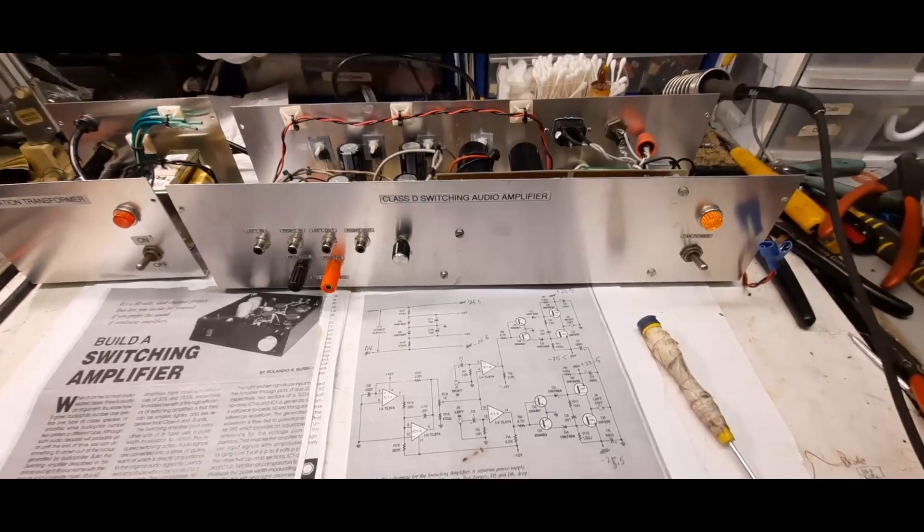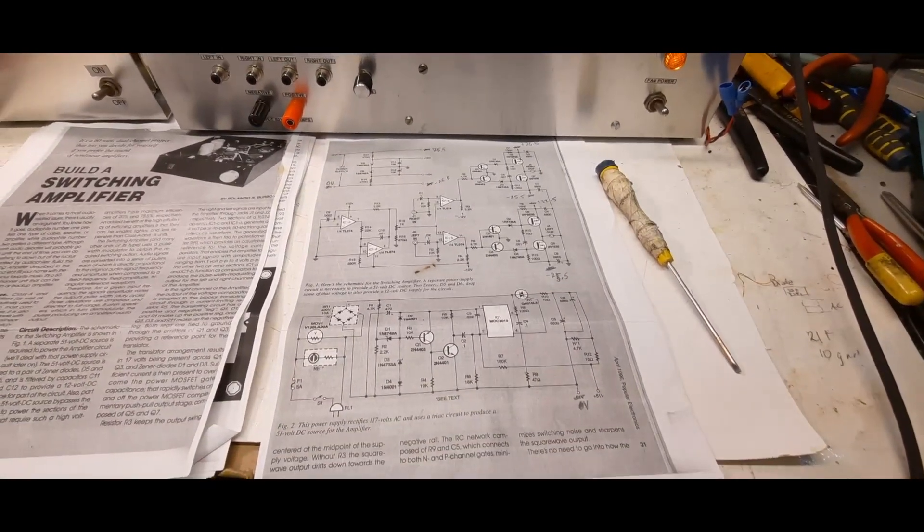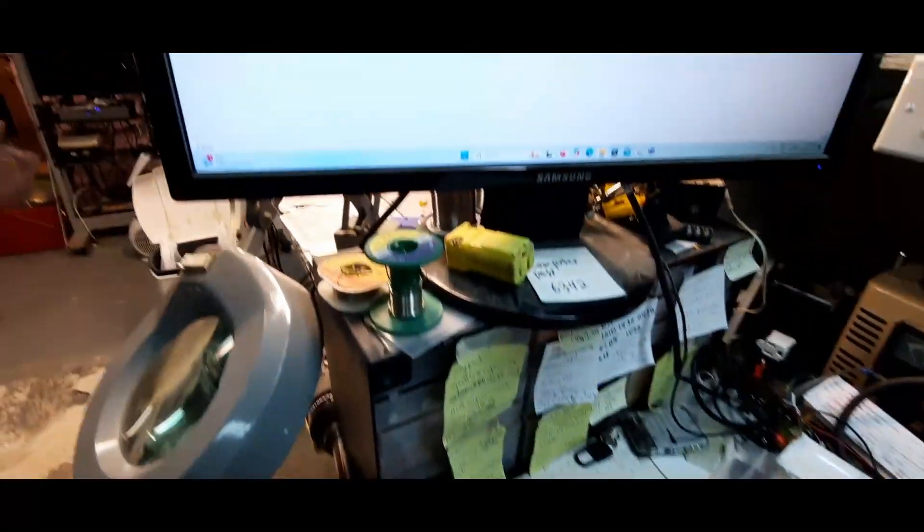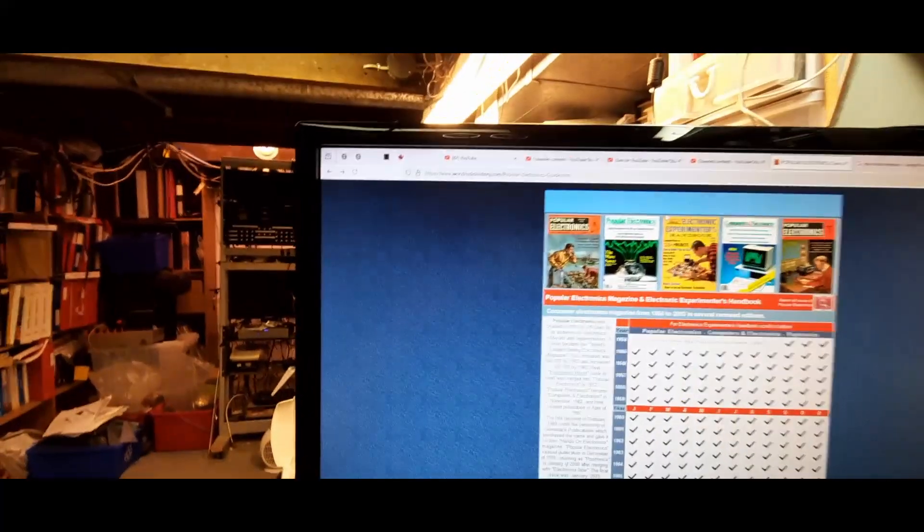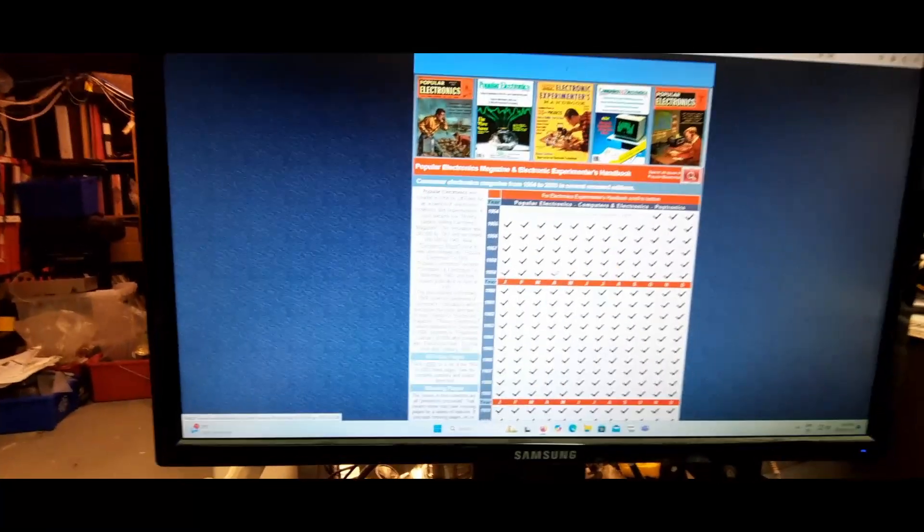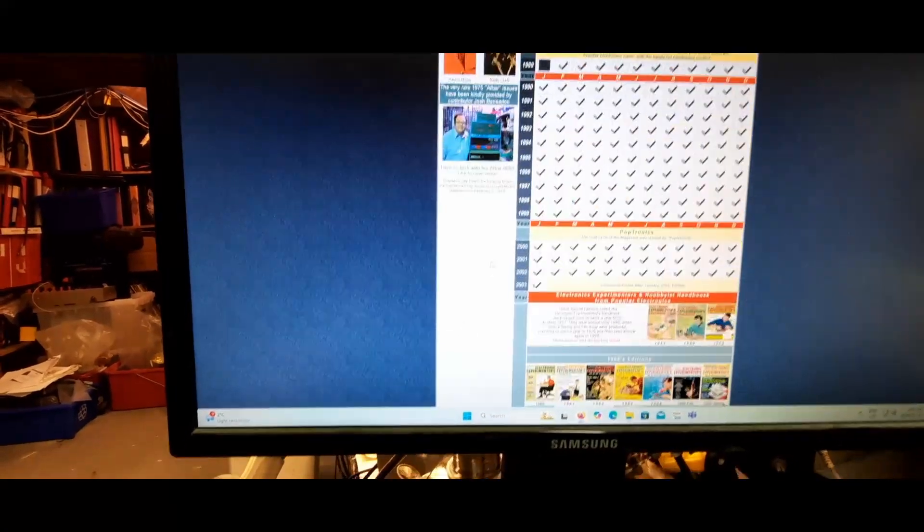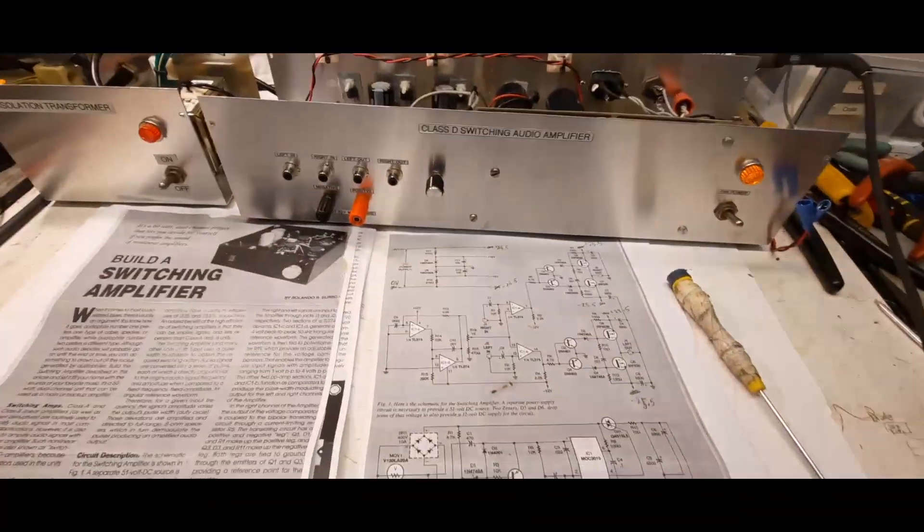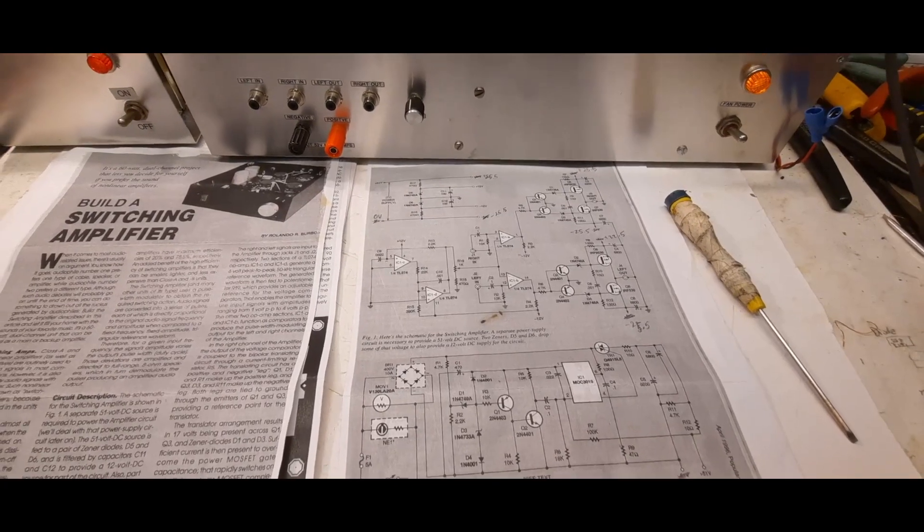By the way, you can actually get all of the Popular Electronics magazines from a website, so I'll put that link in the description. It's got all the issues from 1954 all the way up to 2003. So if you have the itch to build any circuits from Popular Electronics or you just want to go through some of the ones that you built in the past, this is a great resource for you.